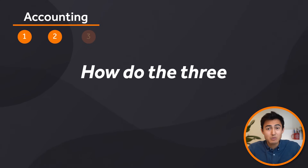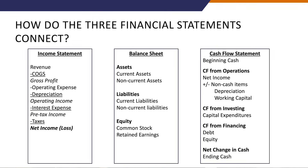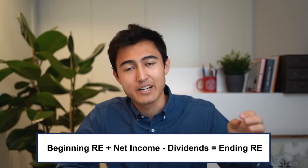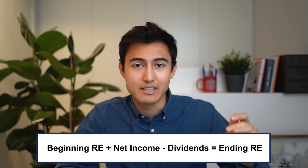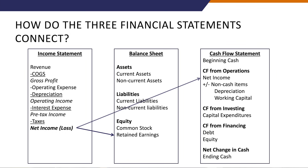Second: how do the three financial statements connect? There's the income statement, the balance sheet, and the cash flow statement. Net income on the income statement links to retained earnings on the balance sheet — retained earnings is calculated as beginning retained earnings plus net income minus dividends, equaling ending retained earnings. Net income also connects to the cash flow statement under cash from operations.